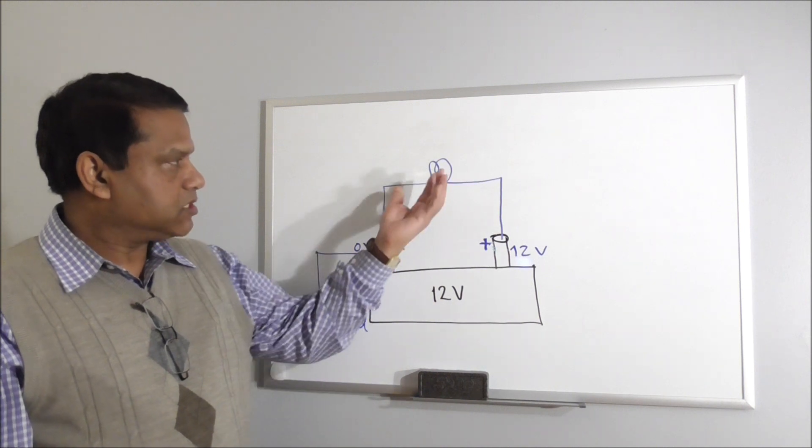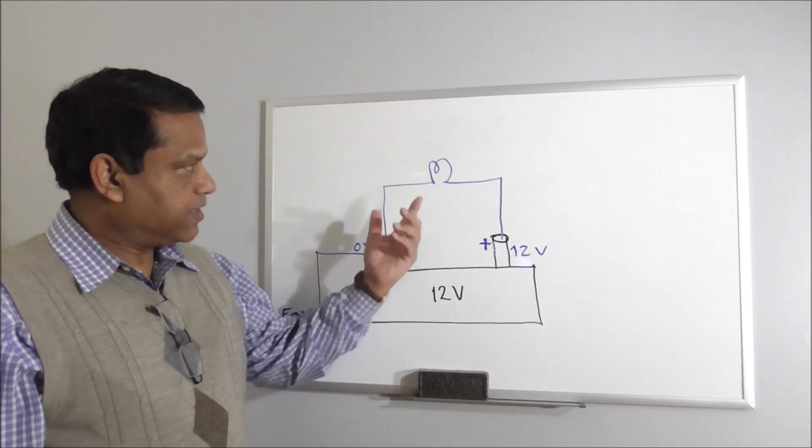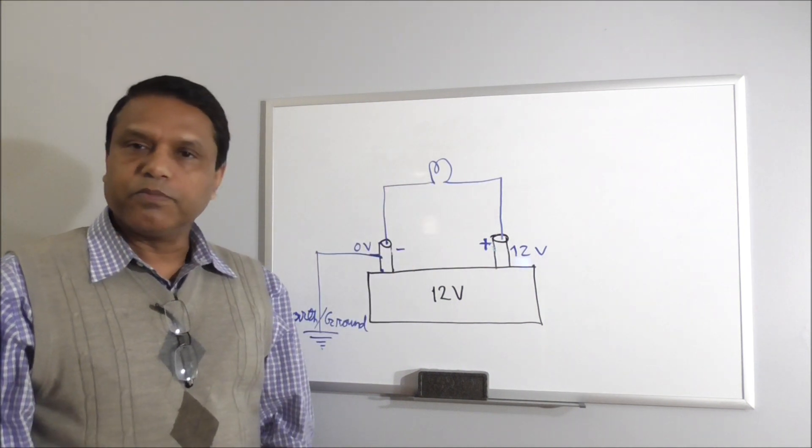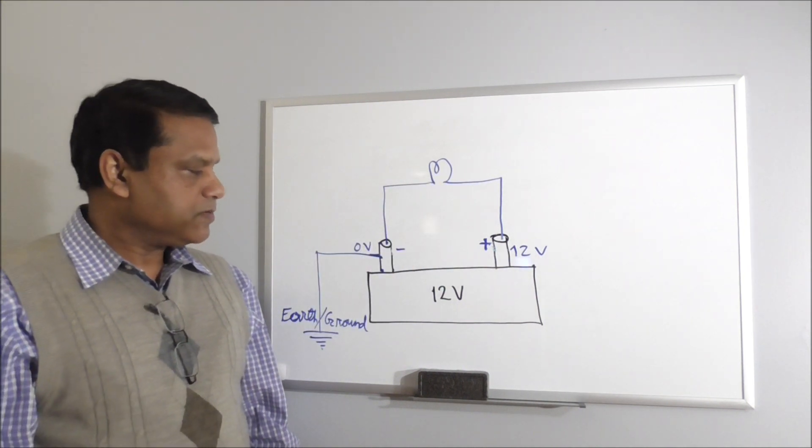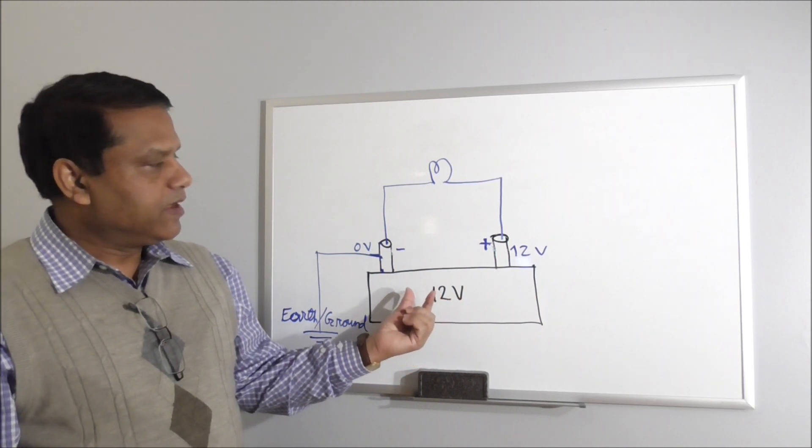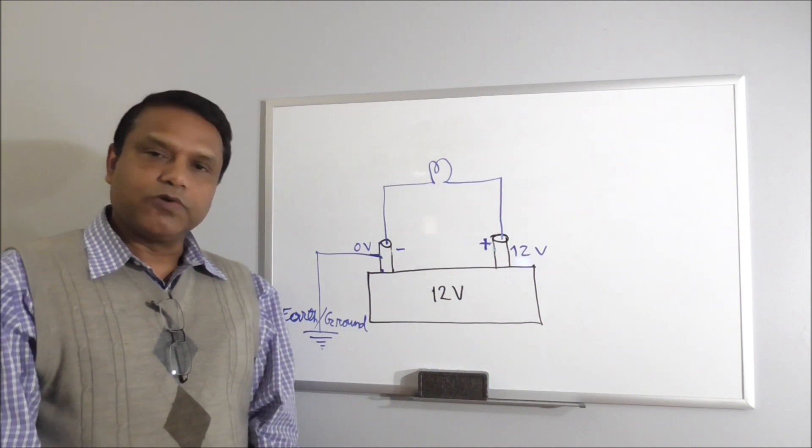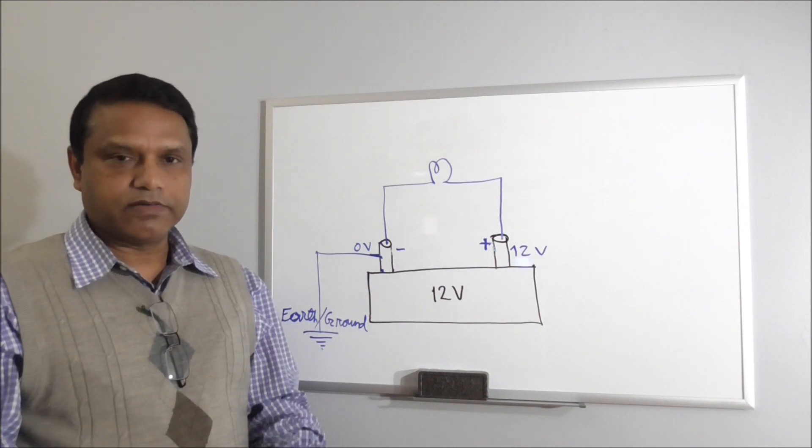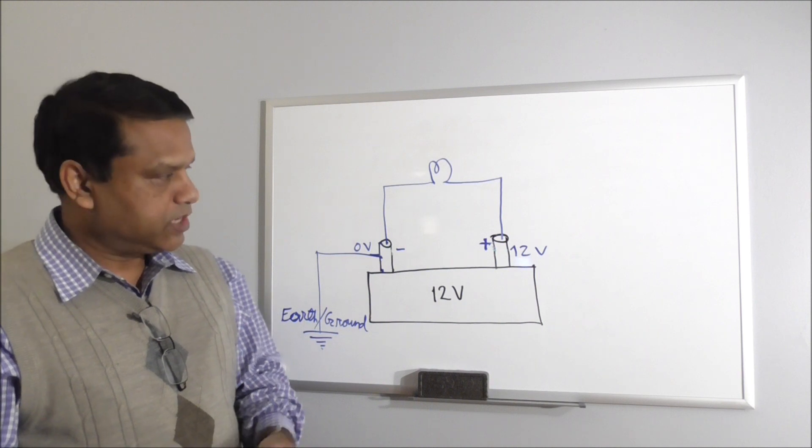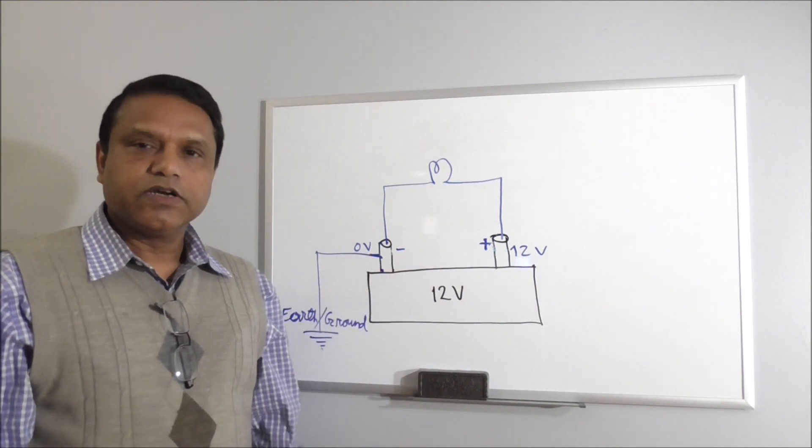Now the question will be, how much light will you get? So that will also depend on the resistance of the bulb and also the amount of voltage. And to find that out, we will need to learn our third topic. Because we already covered voltage and current here.